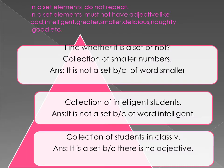In our last slide we discussed the notation of a set. In a set, elements do not repeat. In a set, elements must not have adjectives like bad, intelligent, greater, smaller, delicious, naughty, or good. Question number 1: is a collection of smaller numbers a set?